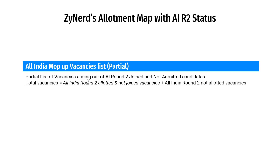This is the complete picture of All India mop-up vacancies, of which a major part — around 4,630 seats — can be derived through the allotment map. There are also around 1,600-plus seats not allotted to anyone, of which more than 50% are deemed seats; the rest belong to AIQ or DNB categories where there were fewer candidates or nobody preferred those seats.